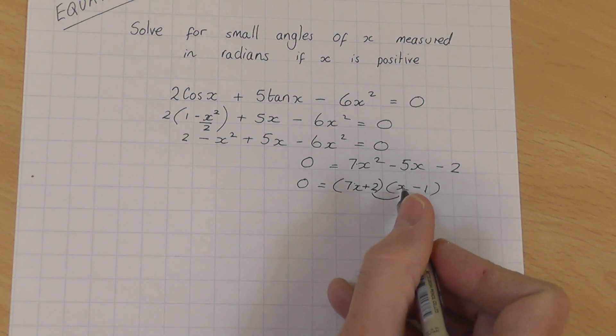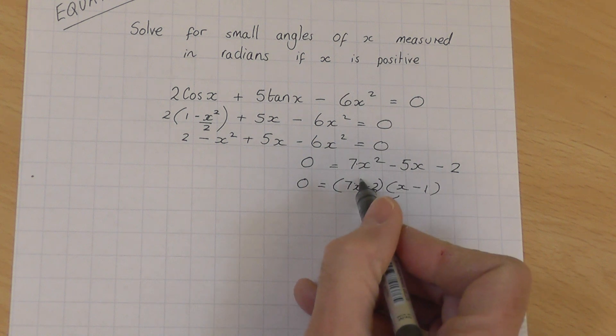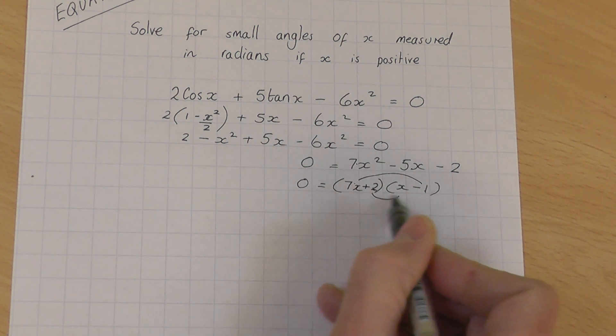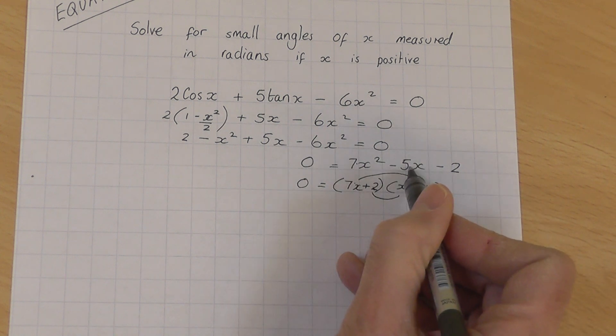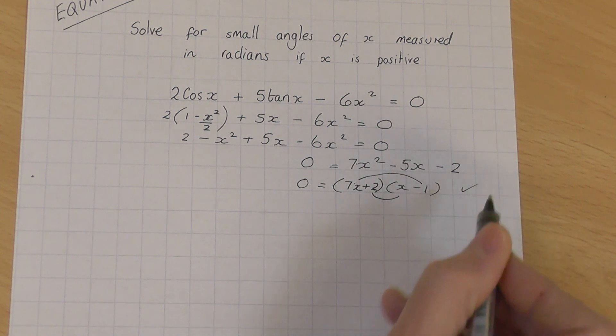And then plus 2 times x is plus 2x. And then you've got the 7x times minus 1 is minus 7x. So minus 7x plus 2x. Put them together, you get minus 5x. So that is the right factorisation.